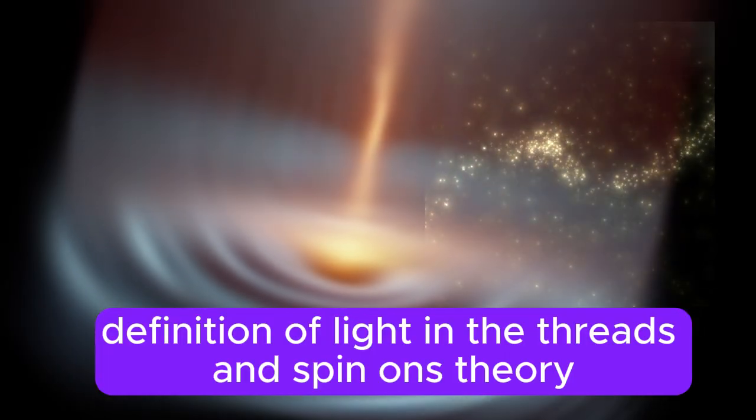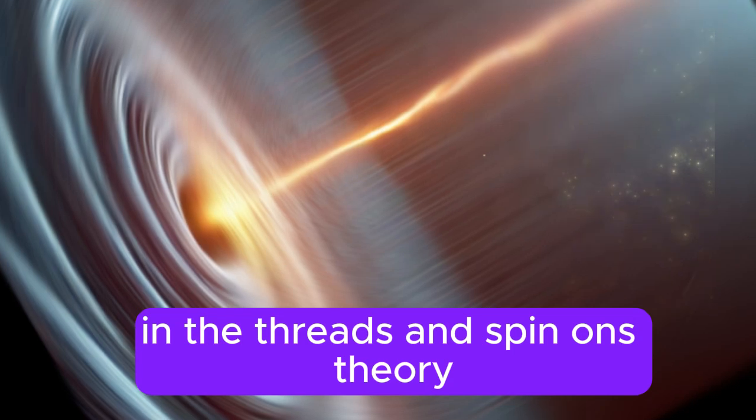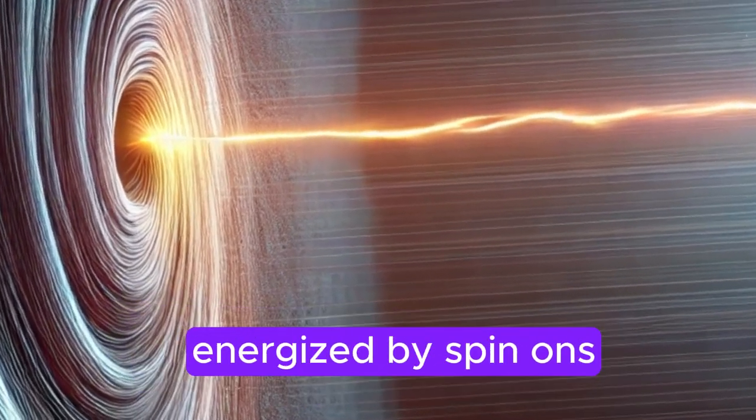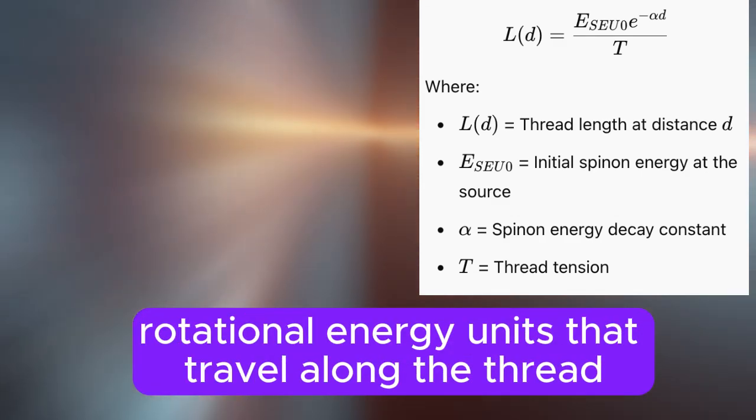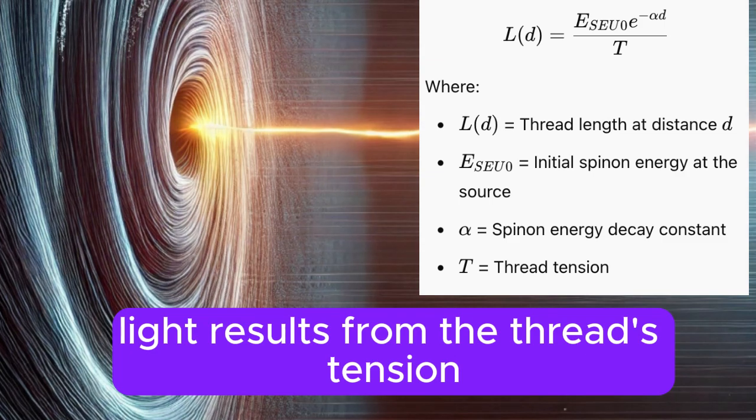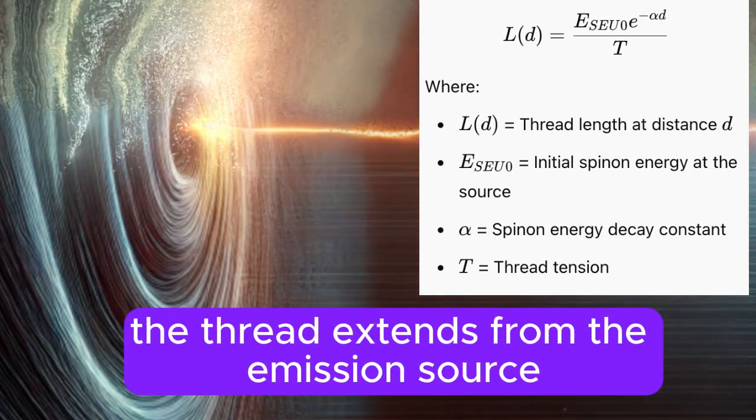Definition of light in the threads and spin-ons theory: In the threads and spin-ons theory, light is described as the physical propagation of a thread energized by spin-ons. Spin-ons are discrete rotational energy units that travel along the thread, and the observable light results from the thread's tension and the energy contained in the spin-ons.